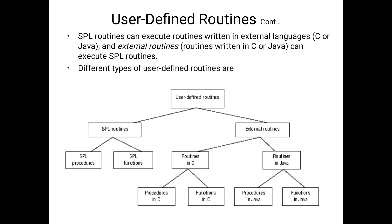We can have processors in C, functions in C, processors in Java, or functions in Java. Similarly, the stored programming procedure language defines stored processor language processors and stored processor language functions. So finally, user defined routines are available in six different types of formats: stored processor language processors and stored processor language functions.